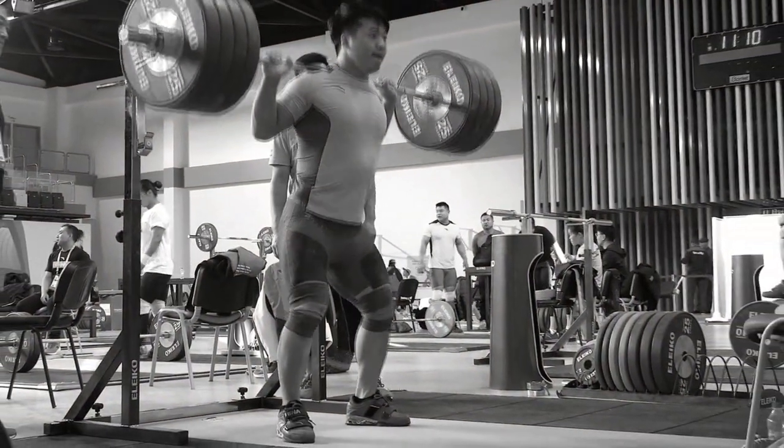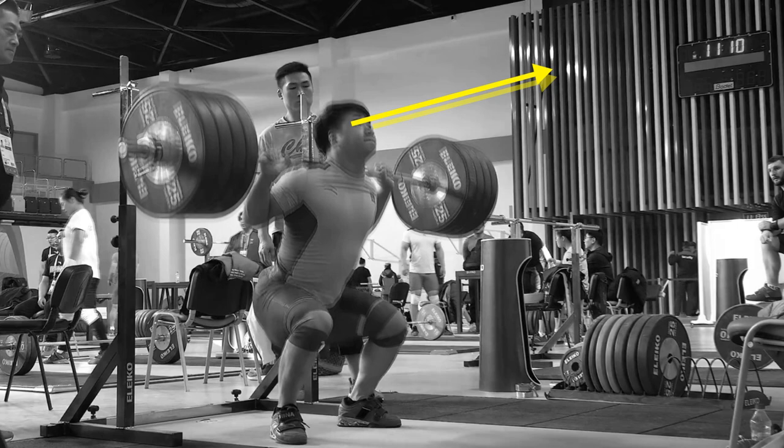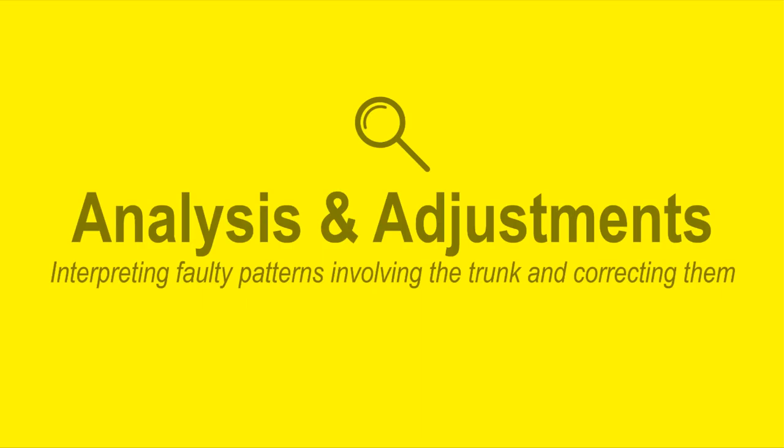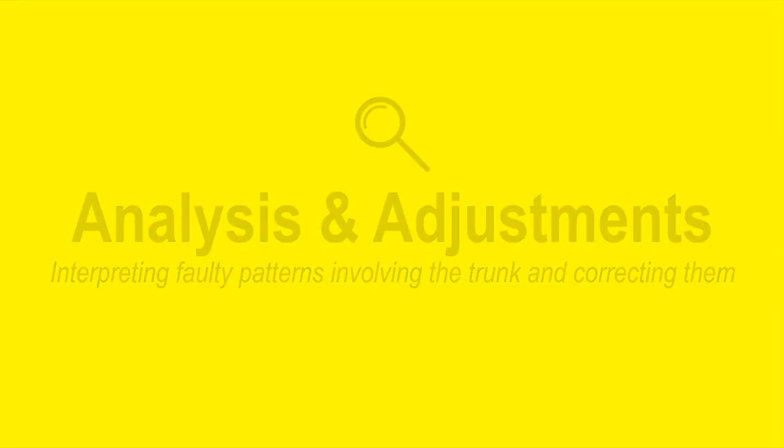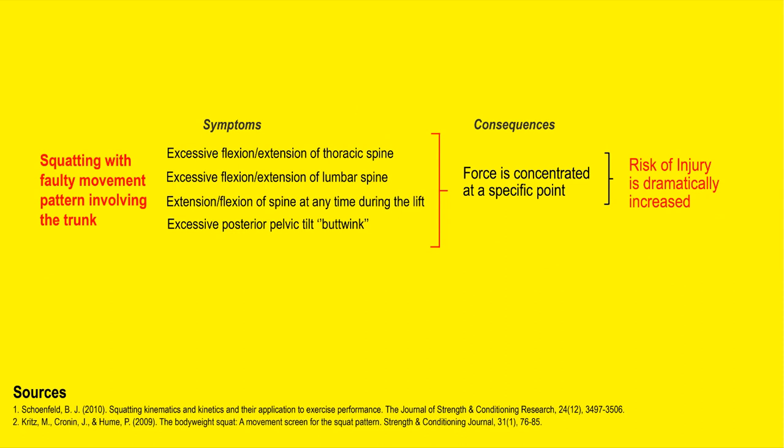When analyzing faulty movement patterns involving the trunk, it is often excessive flexion or extension of the thoracic or lumbar spine — most commonly the lumbar spine, which is way more vulnerable. We can allow slight flexion or extension of the thoracic spine, but the lumbar spine especially must remain neutral. Dynamic extension or flexion that starts during the lift is even worse — if you're going to bend a little, it shouldn't move at all throughout the lift. Excessive posterior pelvic tilt — butt wink — is also a bad symptom of faulty trunk movement patterns.